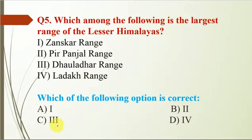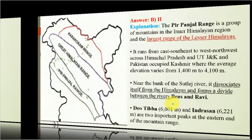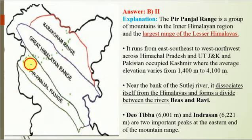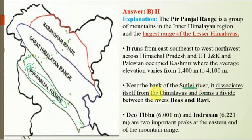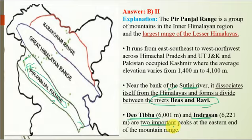Question 5: Which is the largest range in the lower Himalayas? The correct option is B — Pir Panjal range. It is a group of mountains in the inner Himalayan region and the largest range of the lower Himalayas. It runs from east-southeast to west-northwest across Himachal Pradesh, UT Jammu and Kashmir, and the POK region. Near the banks of the Satluj river, it dissociates from the Himalayas and forms a divide between the rivers Beas and Ravi. Deo Tibba and Indra Sen are important peaks at the eastern end.